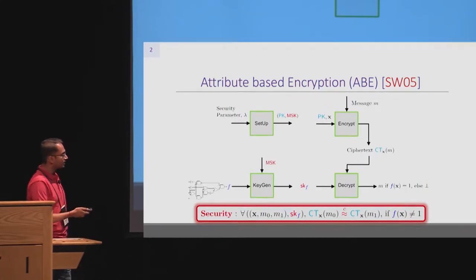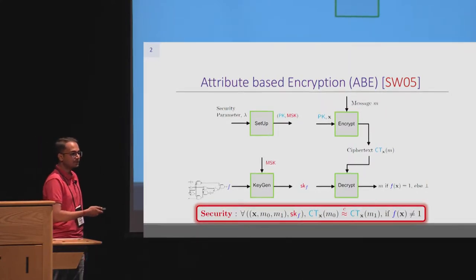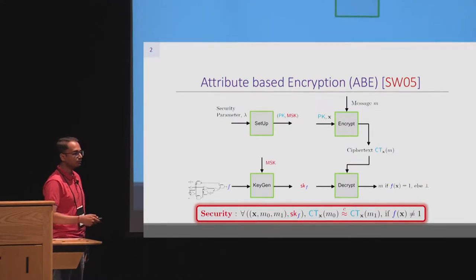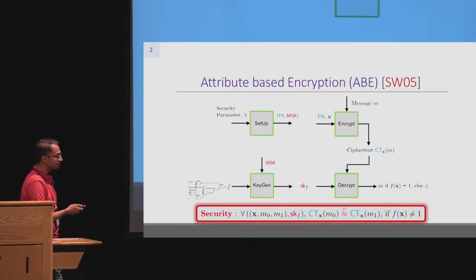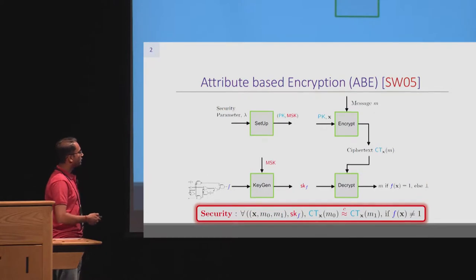Security is defined as follows: for any challenge attribute and a pair of messages M0, M1, and all the secret keys for functionalities seen by the adversary, the cipher text for M0 and M1 with respect to attribute X should remain computationally indistinguishable as long as these secret keys are individually unable to decrypt any of these cipher texts.